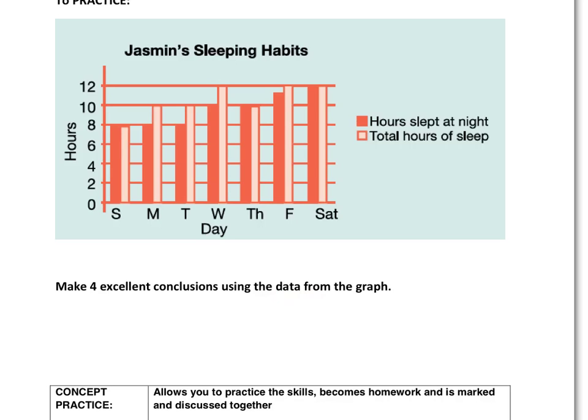We can see that the number of hours that she's sleeping at night is increasing. On Wednesday, Tuesday, and Monday, and Friday, she must have had a nap. On Monday, Tuesday, and Friday, it looks like she had a two-hour nap each day. The day that she got the least amount of sleep would be Sunday. The day that she got the most amount of sleep would be Saturday.